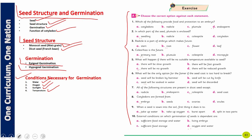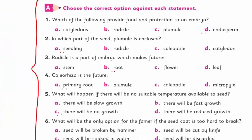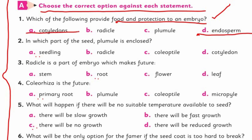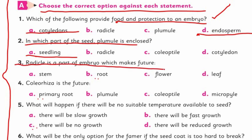Coming towards the exercise — it's a bit tricky, so I'll be helping you. Normally you do your exercise yourself, but I'm going to explain a bit to make it easier. Question one: which of the following provides food and protection to an embryo? If we talk about monocot, the endosperm does this, and in the case of dicot, the cotyledons are doing it. Question two: in which part of the seed is the plumule enclosed? That is called the seed. Question three: the radicle is the part of the embryo which becomes the root.